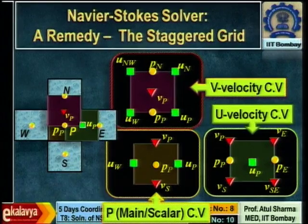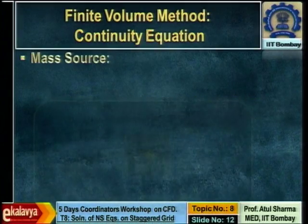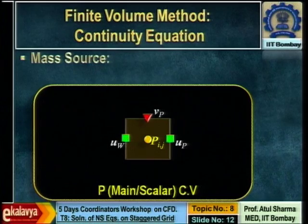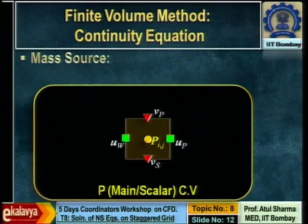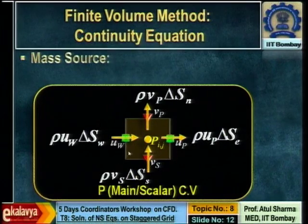Now we have a good feel of the different control volumes and grid point arrangement. In this finite volume method, some new interpolations arise. In the scalar control volume only a first-level approximation is needed — surface averaging of mass flux at the face center — and the second level of approximation is avoided because the velocity is already directly available at the face center.